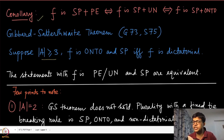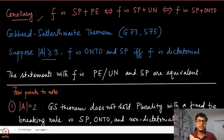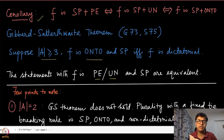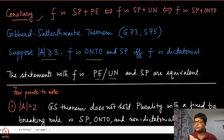This is the corollary, and therefore you can restate the Gibbard-Satterthwaite theorem replacing ontoness with Pareto efficiency or unanimity. So in some texts you will find similar definitions and they are all the same.